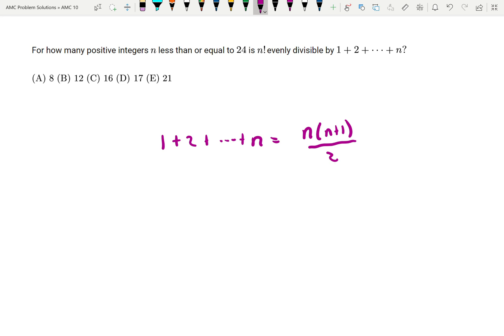So the quotient that we're looking at is going to be n factorial over n times n plus 1 over 2. And another way of writing that is just 2 times n factorial over n times n plus 1.